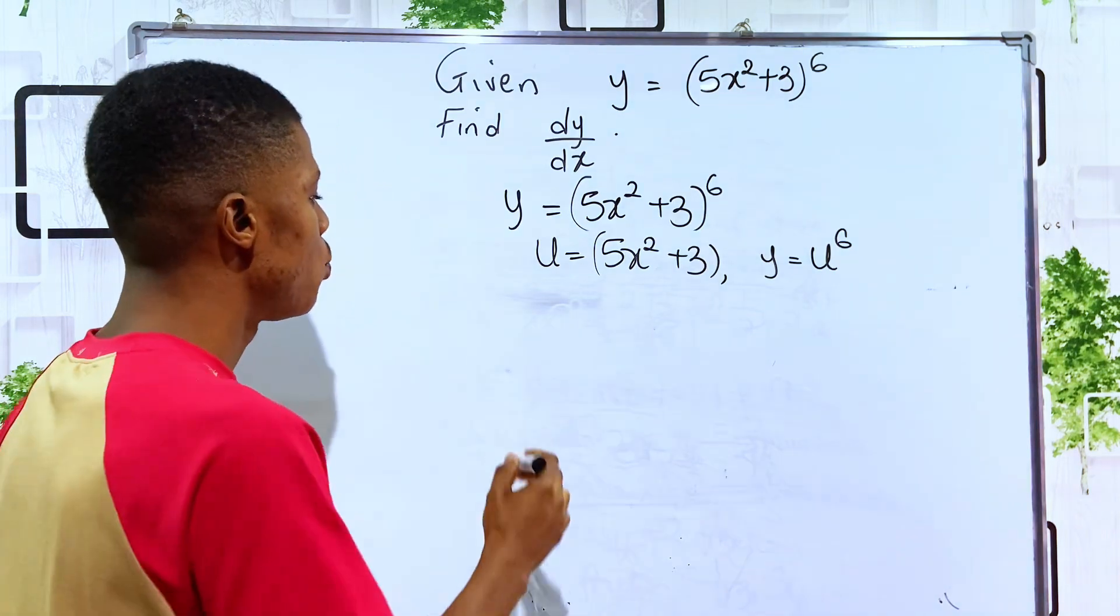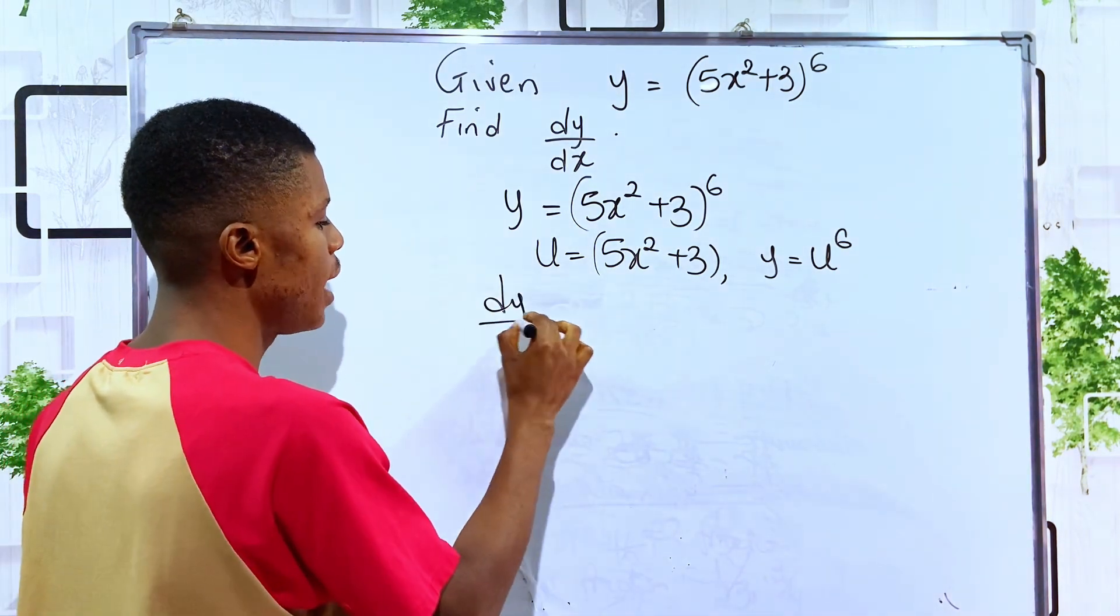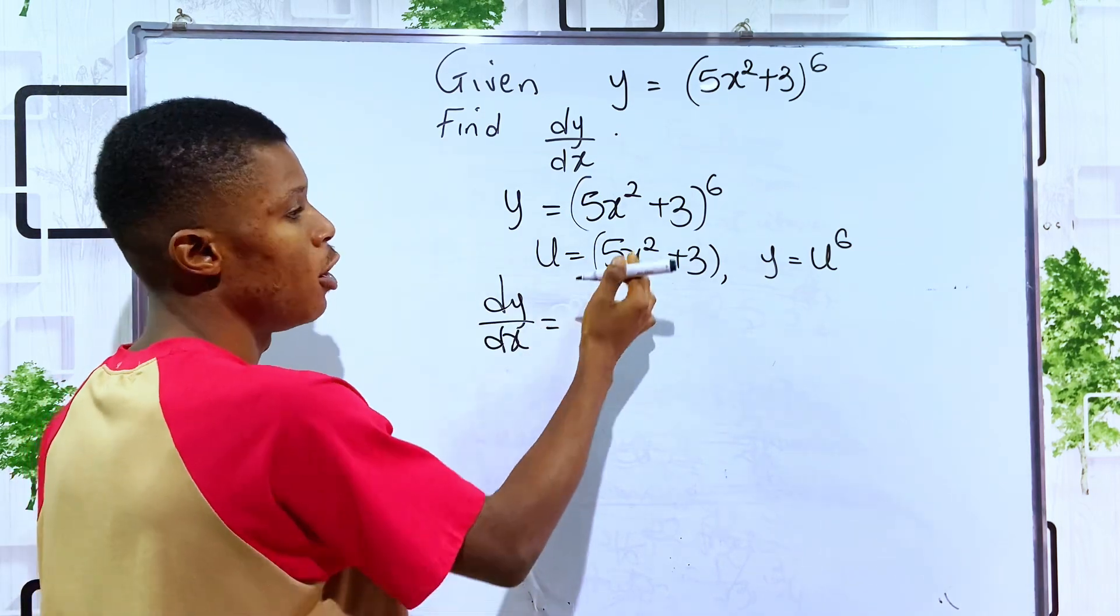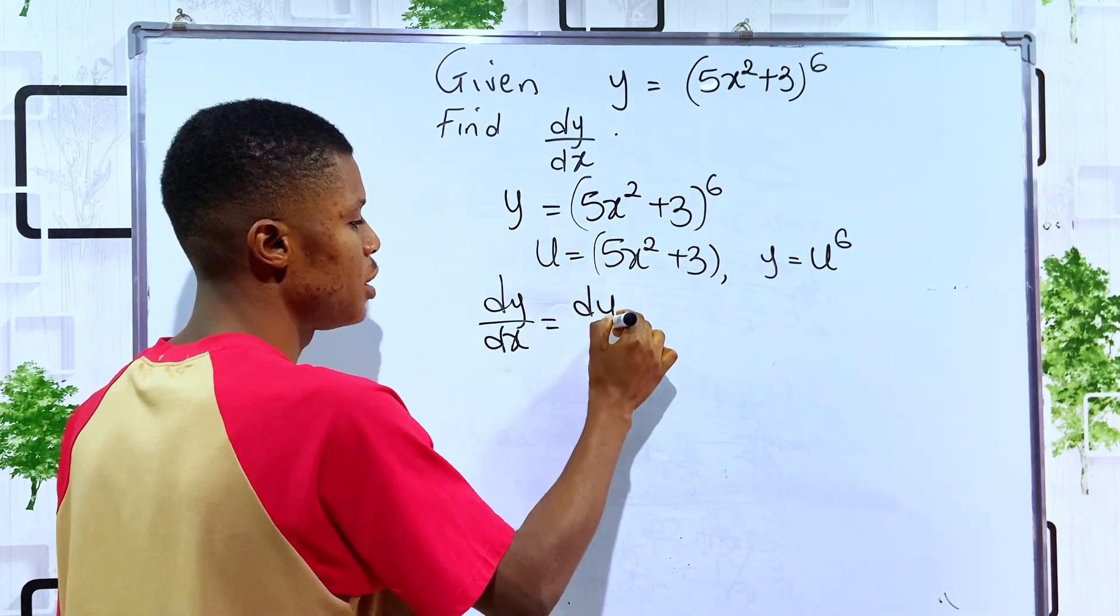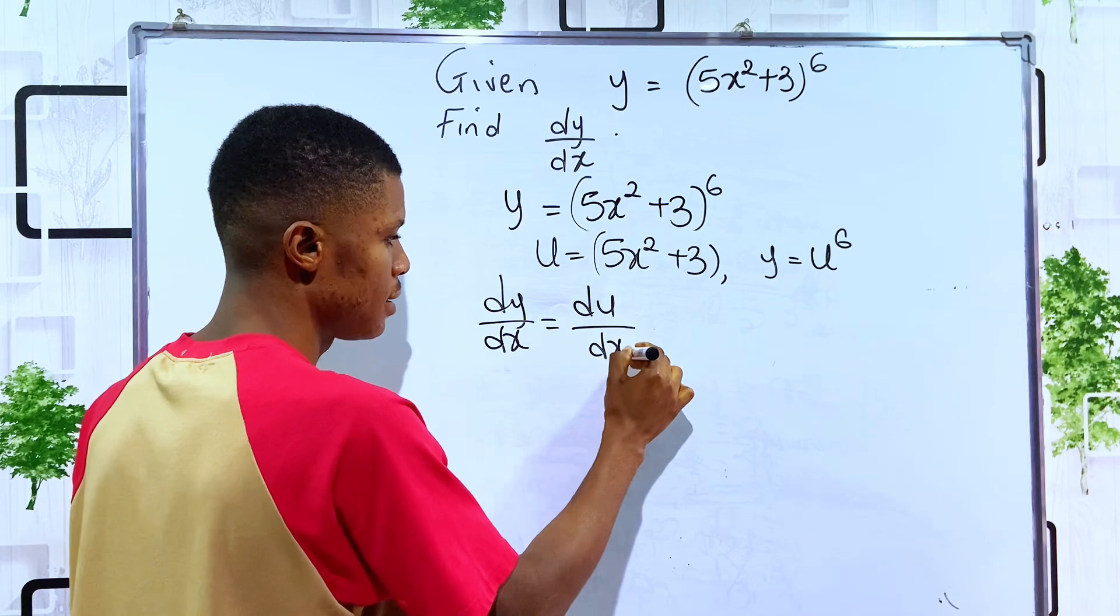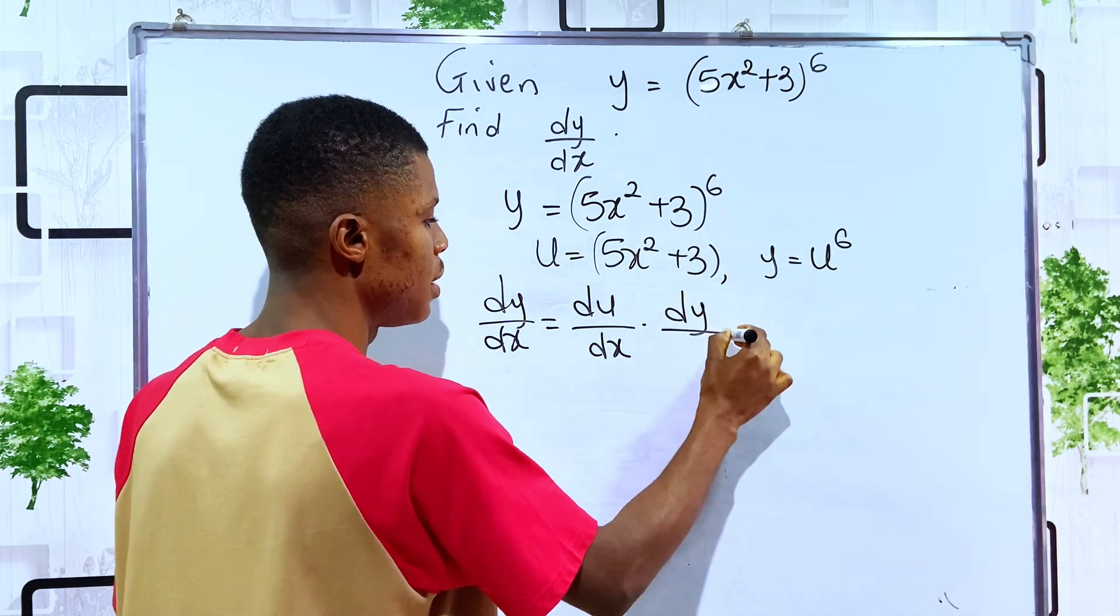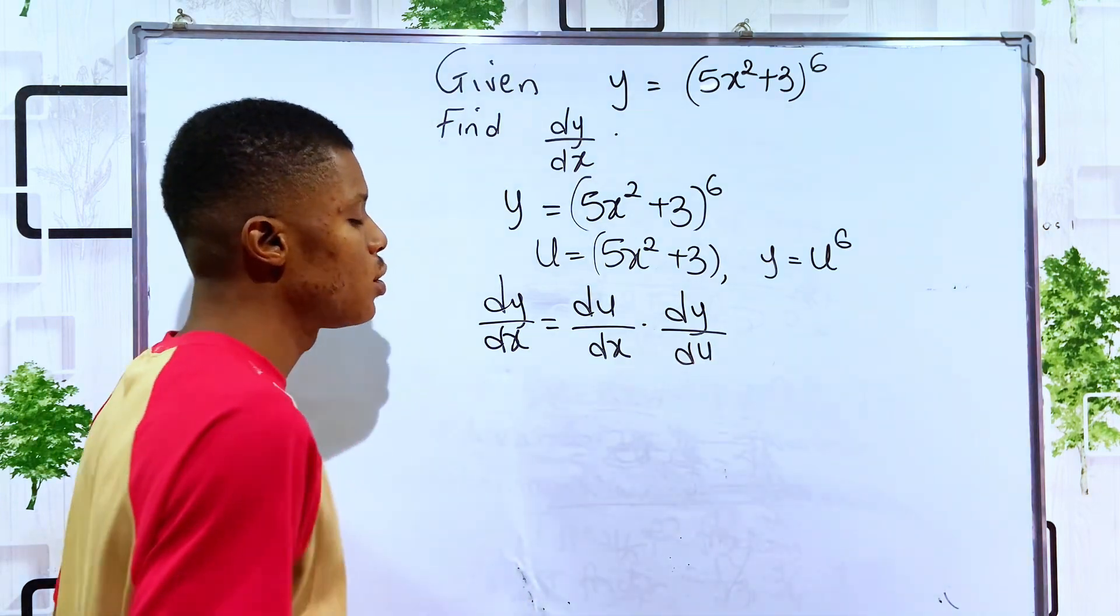And for us to differentiate this form, we know that our dy/dx, differentiating y with respect to x of this nature, is differentiating u with respect to x and differentiating y with respect to u.